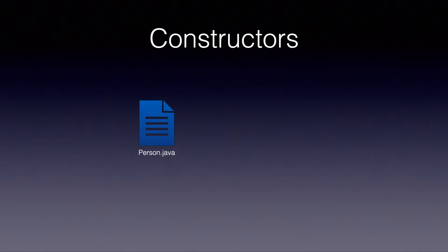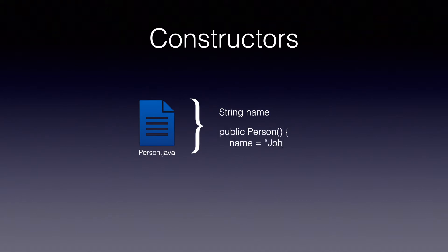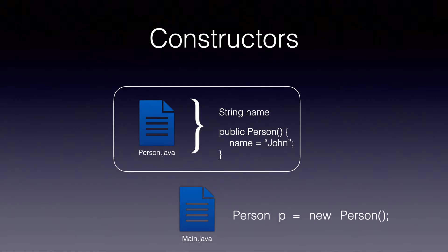Let's get started with constructors. For this topic I will be creating a class called Person.java which will represent a real person. That Person.java will have a variable called name which will contain the name of the person. I will also write a constructor of the class and another class called Main.java. This Main.java class will have the main method, which is the entry point of the program. In the main method we will create an object of Person. To use any class in the programmatic way we have to create the object in the heap memory.